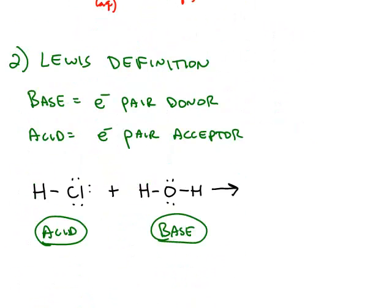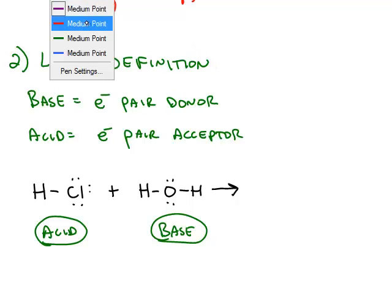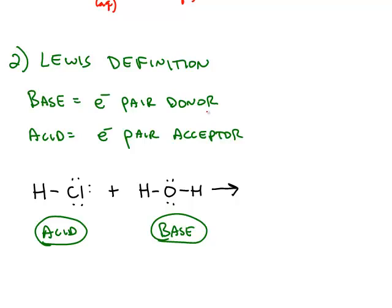The other definition that we're not going to use as extensively as Bronsted-Lowry is the Lewis definition. And in this system, a base is a chemical that donates a pair of electrons, and an acid accepts a pair of electrons.